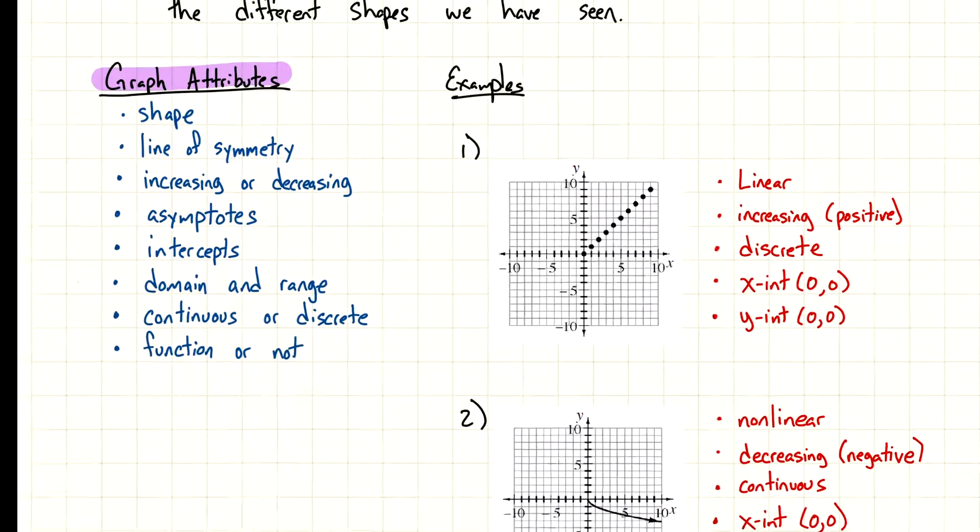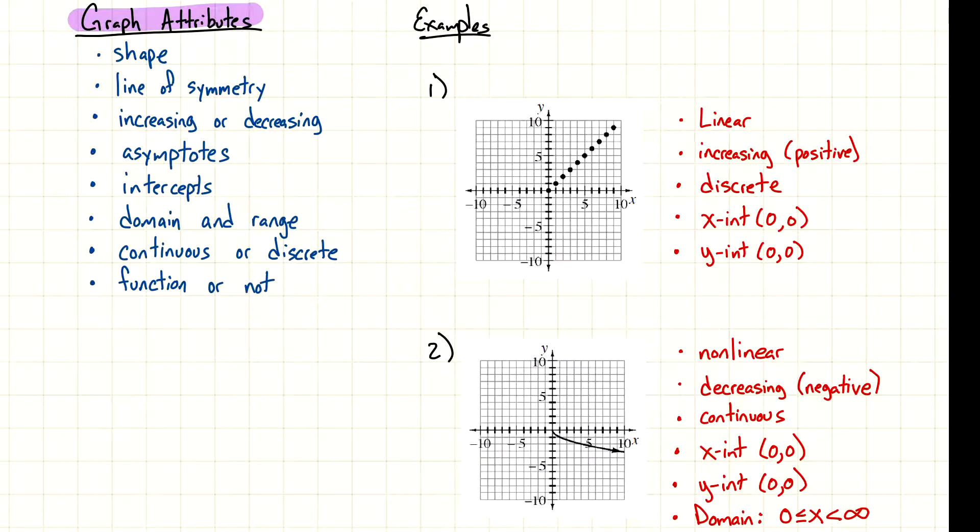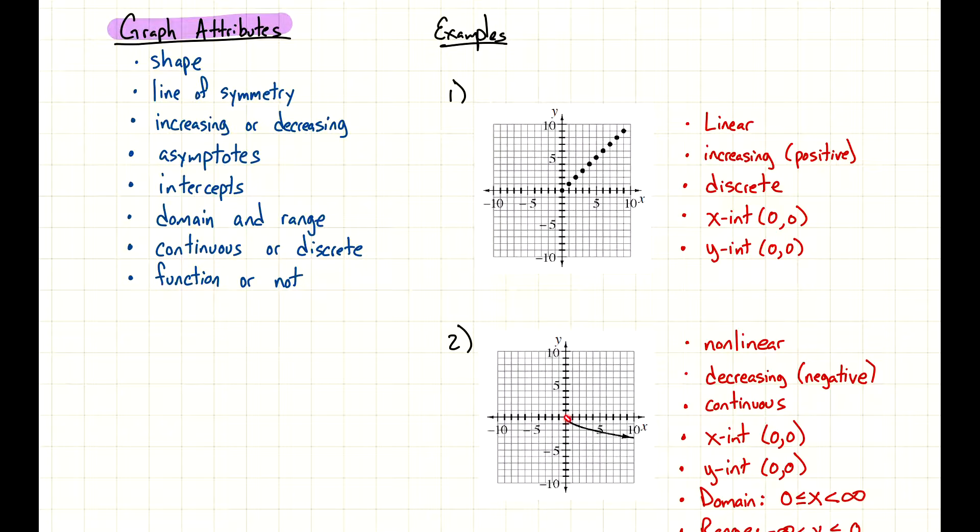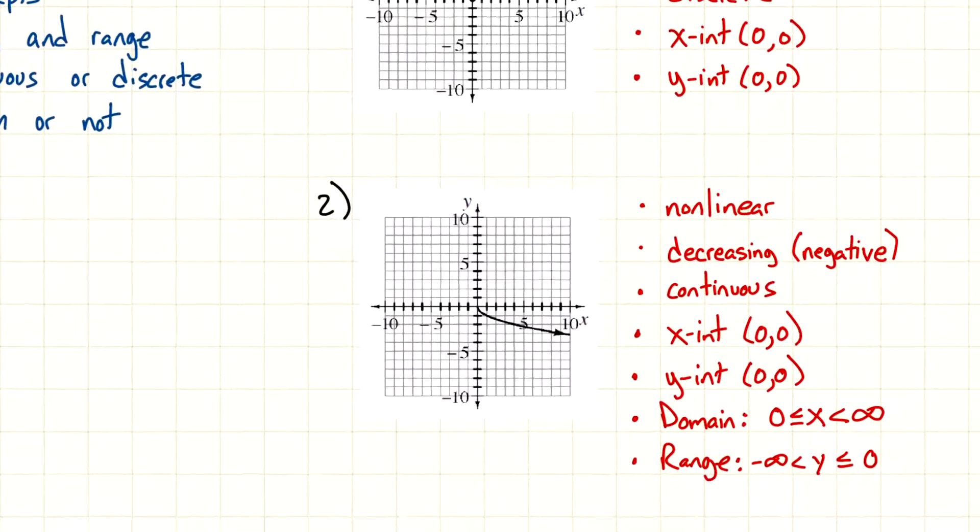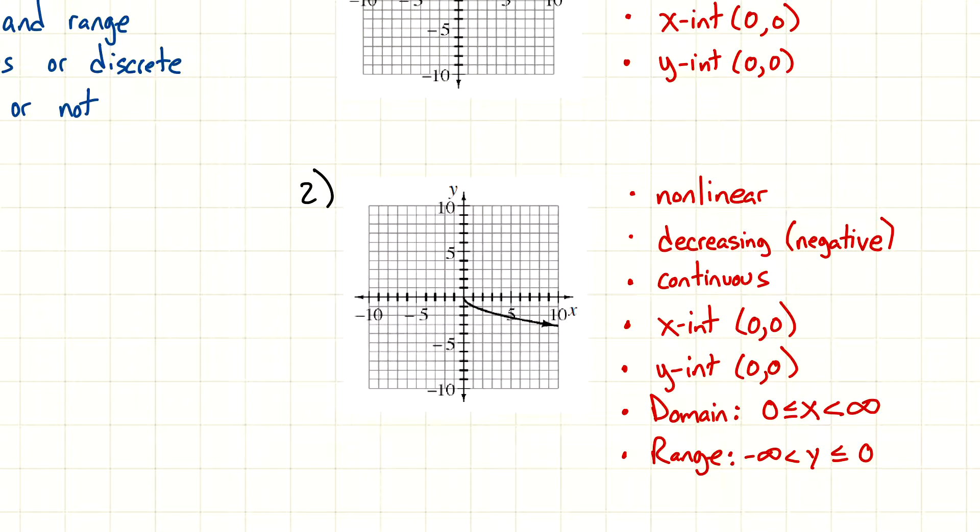On the second graph that I have for us, this one is a little bit... It looks curved, which in this case, I could call this nonlinear. Or if you want to just say it's curved as well. When we see this graph a little bit later in the course, it'll have a more specific name. But for right now, we could just call it nonlinear. It's decreasing negative because I see it going in this negative direction. It's going down. It keeps going down.